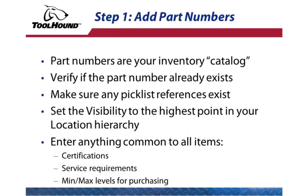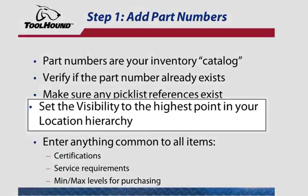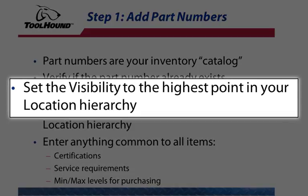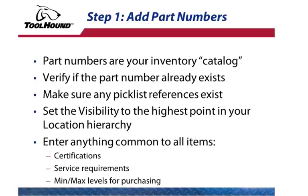Step 1: add part numbers. As covered in the core principles video, part numbers create your catalog of inventory and carry all the common characteristics of a type of tool, equipment, or asset. The first step in adding inventory to ToolHound is making sure the part numbers exist in your database. If you want to add any pick list references to your part numbers, such as a new manufacturer or vendor, add them first so they are available when you add the part. When adding new part numbers, set the visibility to the highest point in your location hierarchy so that all stocking points can use this same part number. This ensures standardization across your organization.